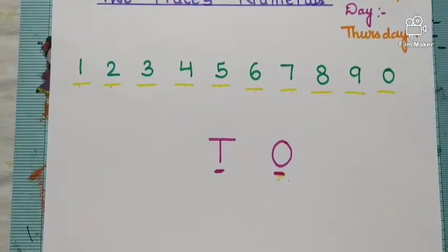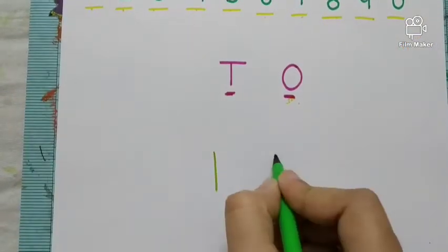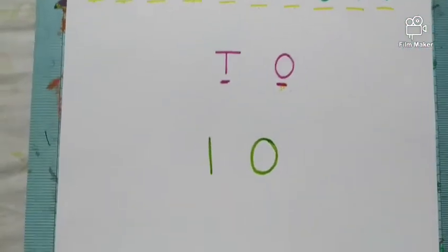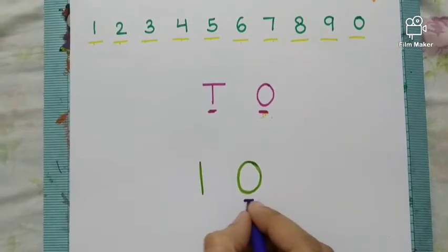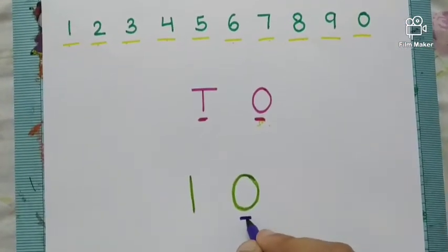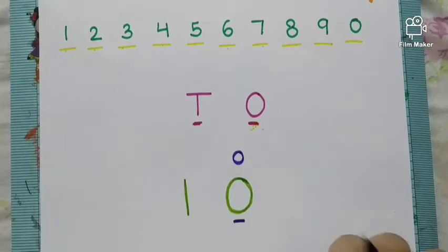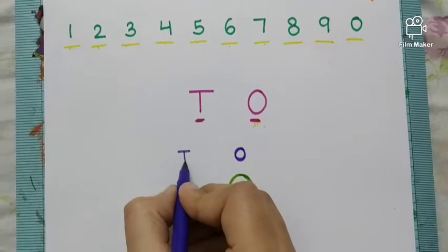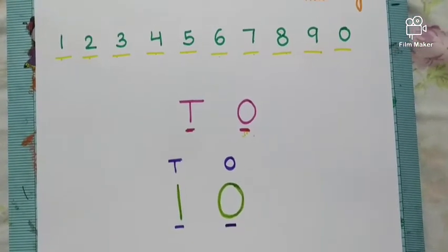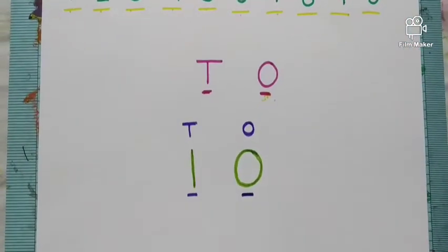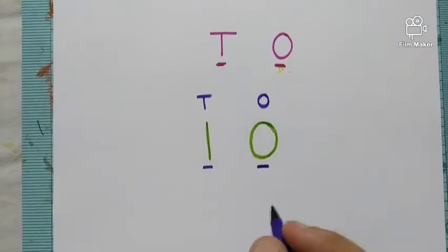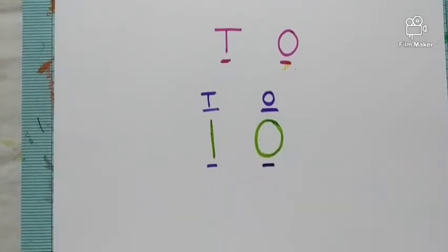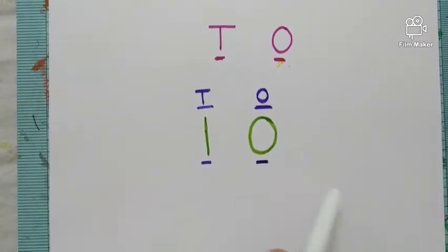Now, to write 10, we need two places. Ab hain 10 likhne ke liye two place chahiye hoangi na. This is number 10. Right mein kaunse number likha hai? 0. Toh isko hum place value chart mein kaun put karenge? In one's column. One's column mein 0 put karenge. And 1 kaunpe hai? Left mein. Left side mein 1 hai. Toh isko hum ten's column mein put karenge. So, number 10 is 1 ten's and 0 one's. In the numeral 10, 1 stands for 1 ten's and 0 stands for 0 one's. 10 is a two-digit number because it is made up of two numerals 1 and 0.